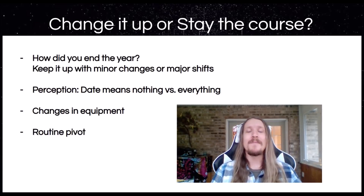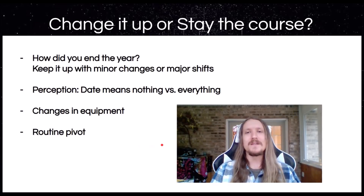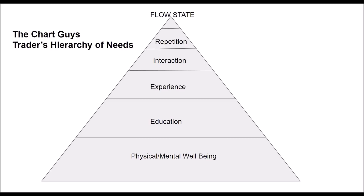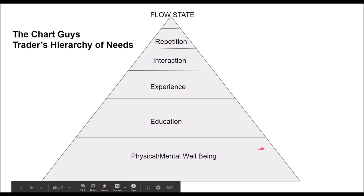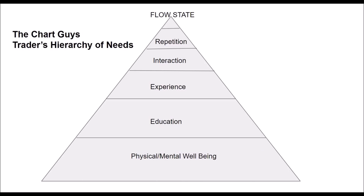I did my own little version for a trader's hierarchy of needs. You'll see at the bottom and the base — the most important aspect that everything else builds off of — physical and mental wellbeing. This stuff is very straightforward, but we get caught up in the day-to-day routine of our lives and can forget some of it.